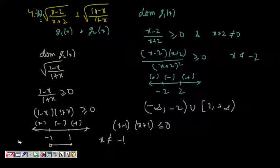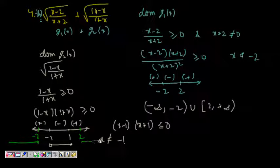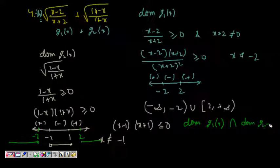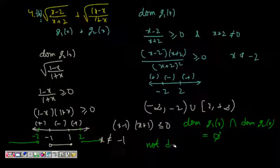Looking at the two domains: g1(x) gives (-∞, -2) ∪ [2, +∞) and g2(x) gives (-1, 1]. These two domains never intersect, so the domain of f(x) — which is the intersection of the two — is a null set. The function is not defined anywhere.